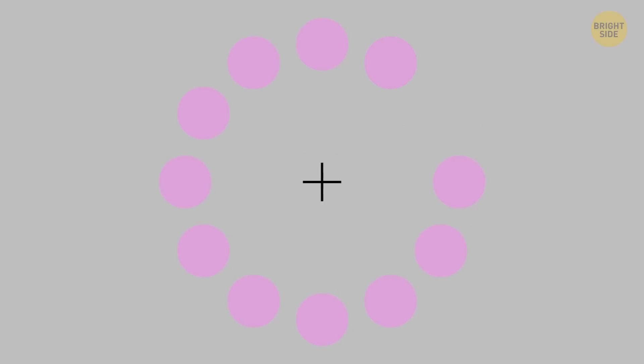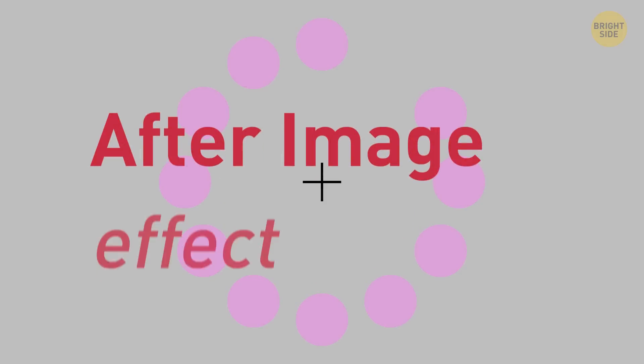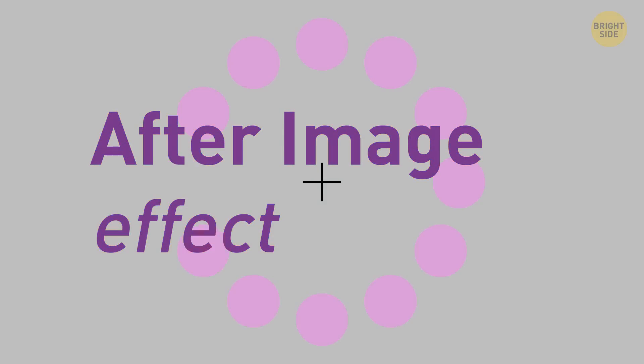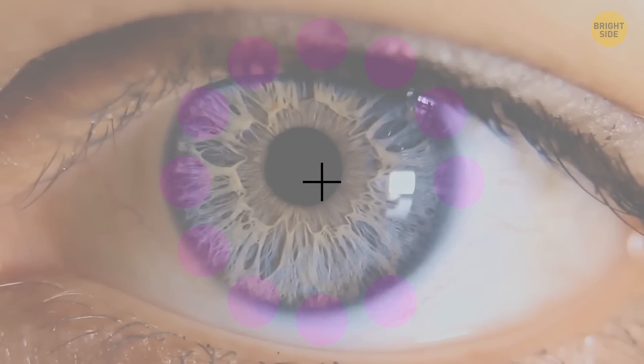There are 12 dots here, all of them are lilac. Your task is to stare at the cross in the middle of the dot ring. As one lilac dot disappears for a moment, a green dot takes its place. It also gradually wipes away other lilac dots one by one as it moves around the circle. This is the after-image effect in action. The rods and cones adjust to the constant disappearance of lilac dots. They replace it with a color from the opposite end of the spectrum, which is green.